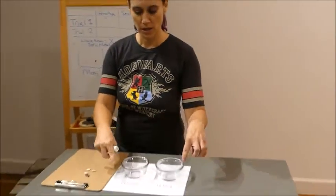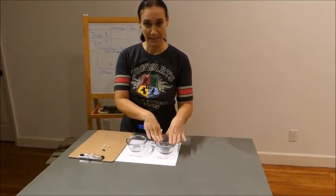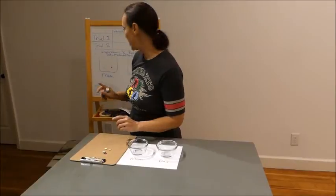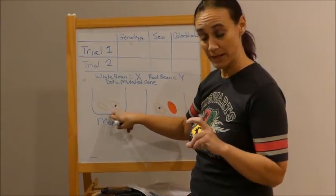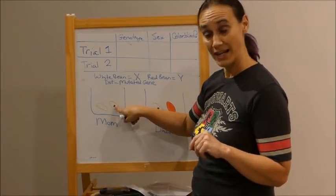So here is my mom. This is my mom here. This is my dad cup here. So in my mom cup, here's what I want to put: two of the white beans, one of them that has a dot.